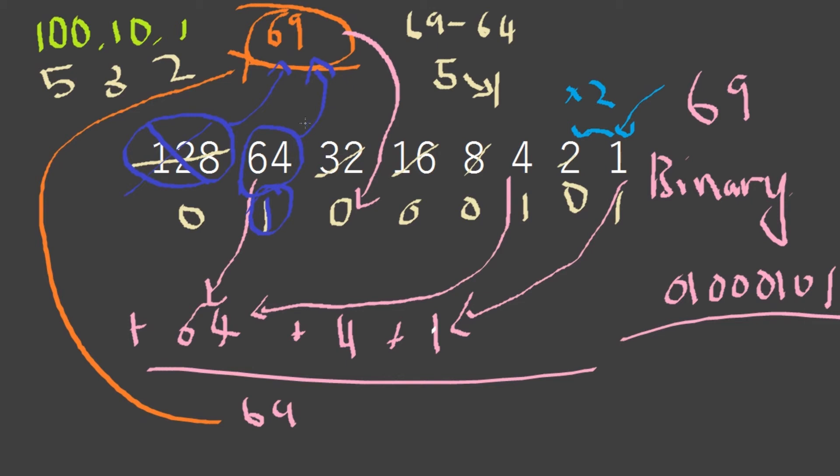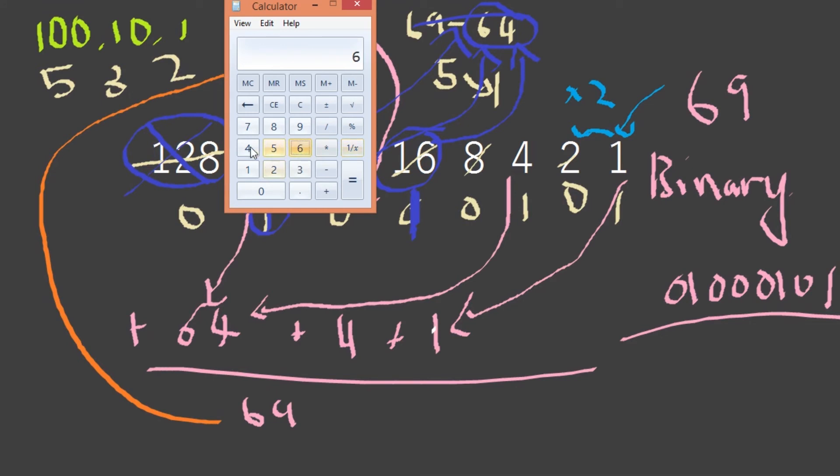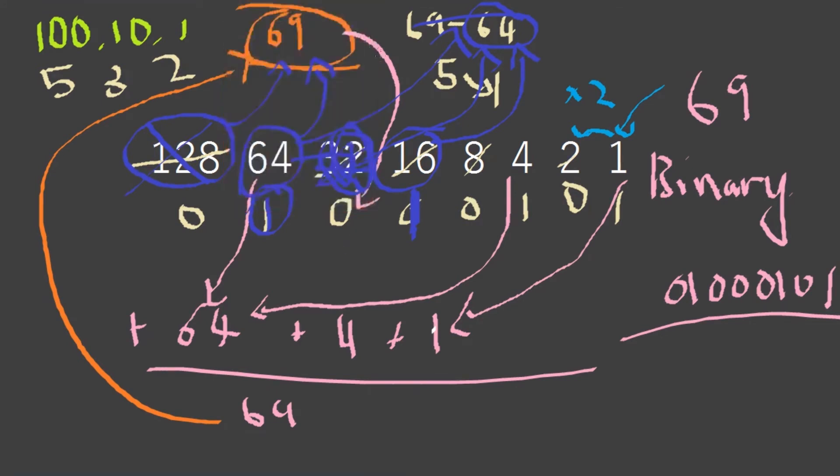Can 32 go into 5? It cannot. Can 16 go into 5? It actually can—wait, 16 can go into 64, so then we go there. Now 64 minus 16 is equal to 48. Wait, we're at 5 so it's 0.